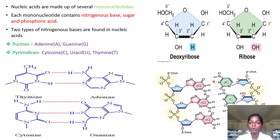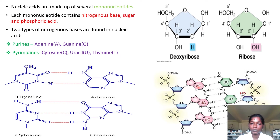Now we will see how nucleotides bind to form the DNA structure. The phosphate group is surrounded by four negatively charged oxygen atoms. This phosphate group gets attached to the sugar group, which then attaches to the nitrogenous base to form the nucleotide. This is how nucleotides bond to form the molecular structure of DNA. The purine gets bonded with the pyrimidine in the nucleic acid.